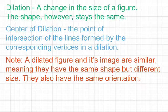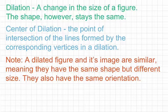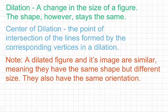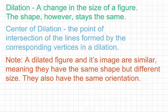Before we look at some examples, there are a couple things to note. First, a dilated figure and its image are similar, meaning they have the same shape but different size. They also have the same orientation. Just like a translation and its image will have the same orientation, the same thing is true with dilated figures as well.